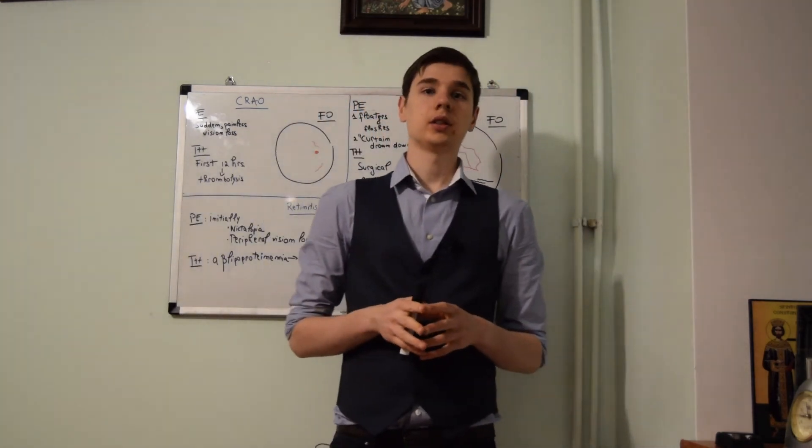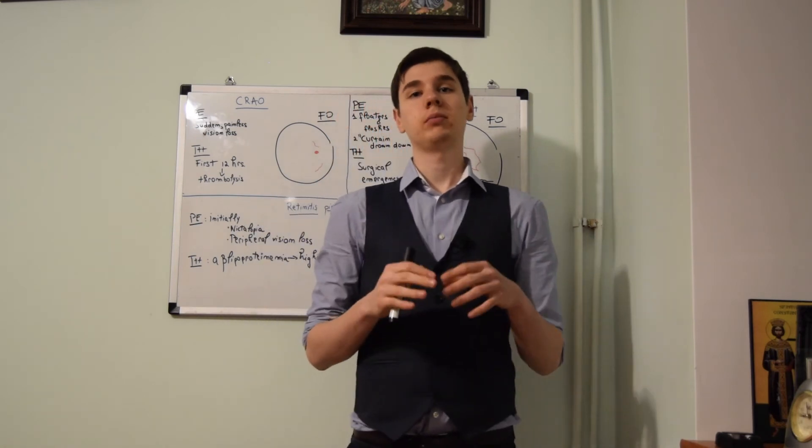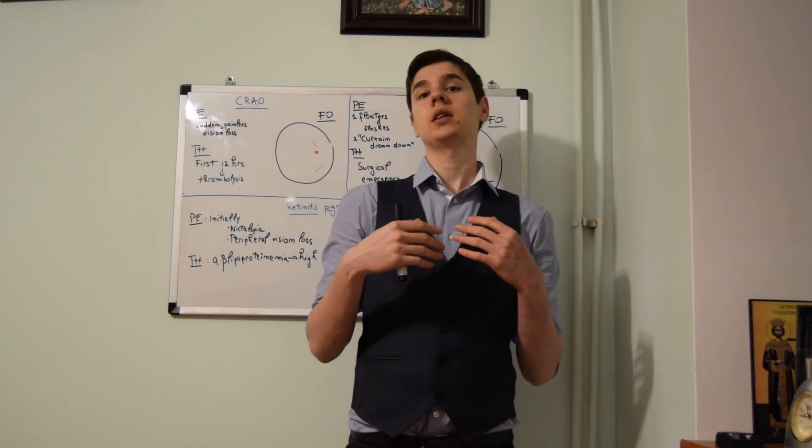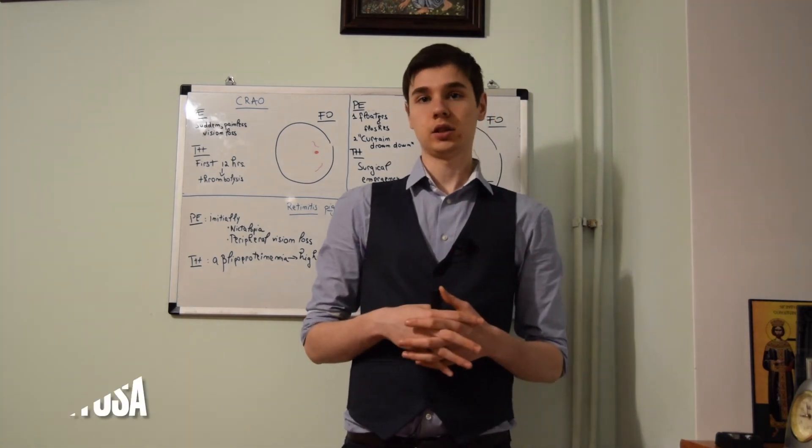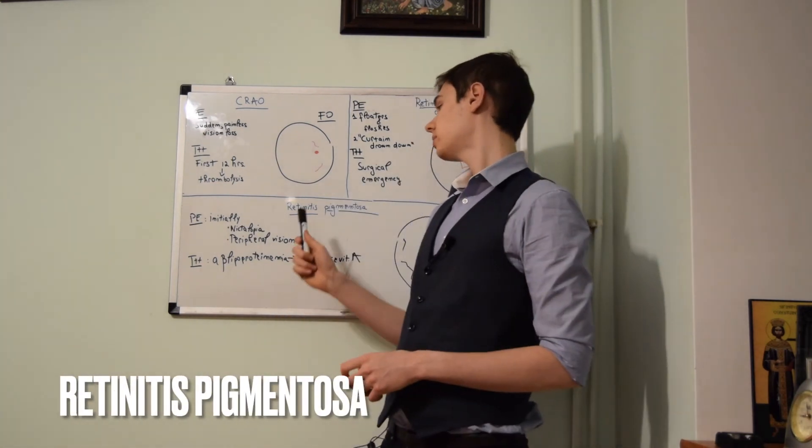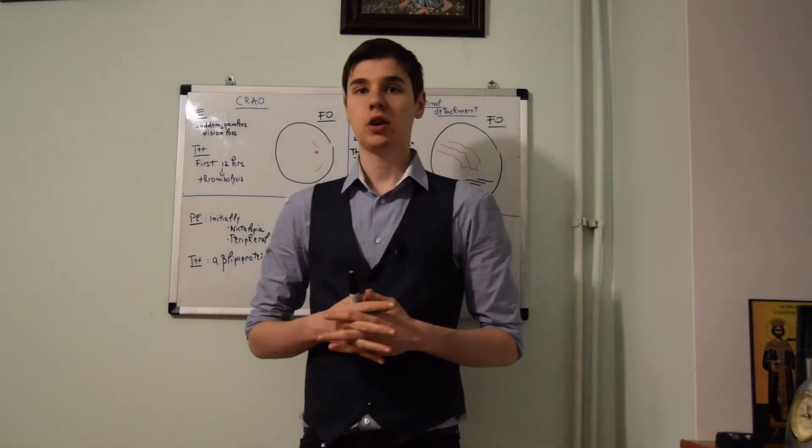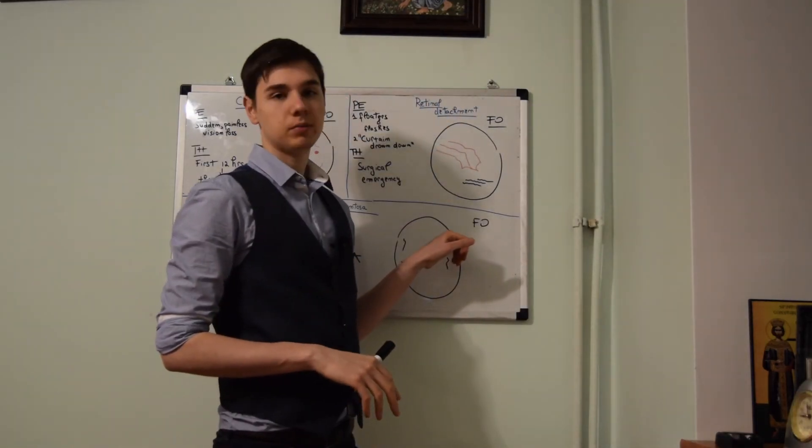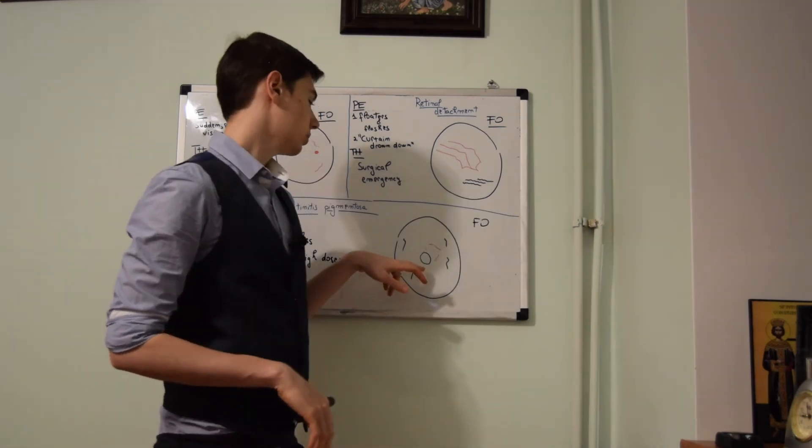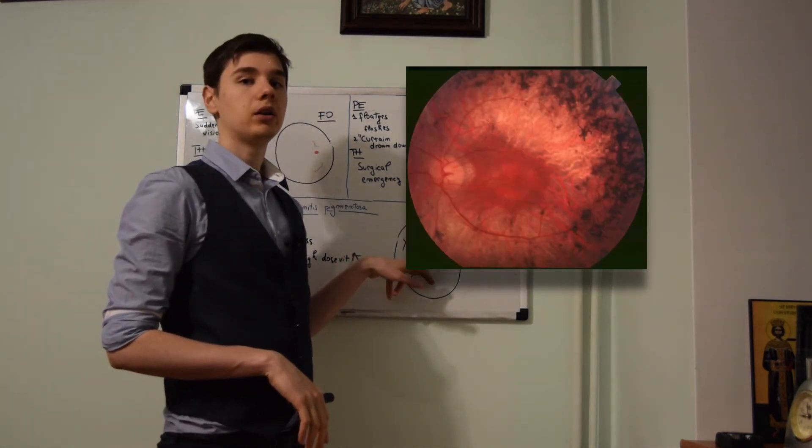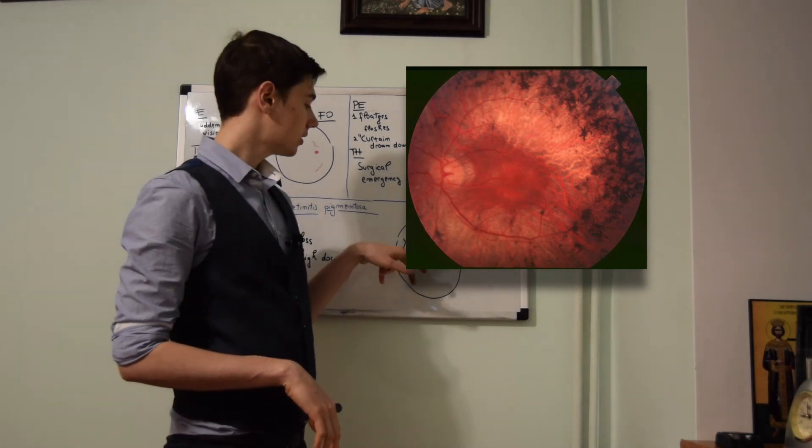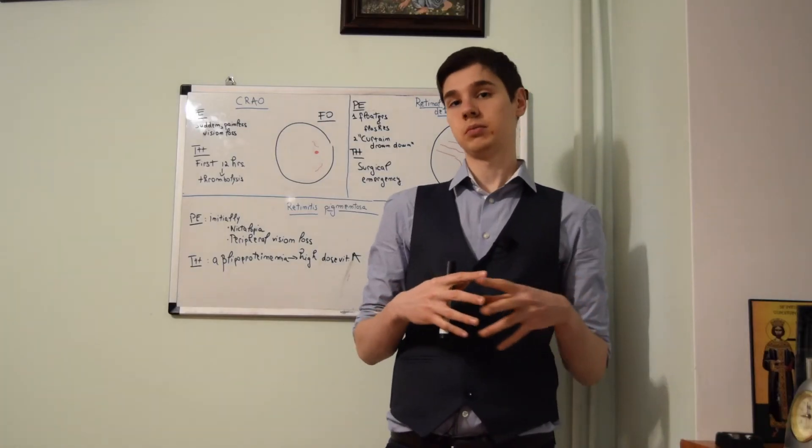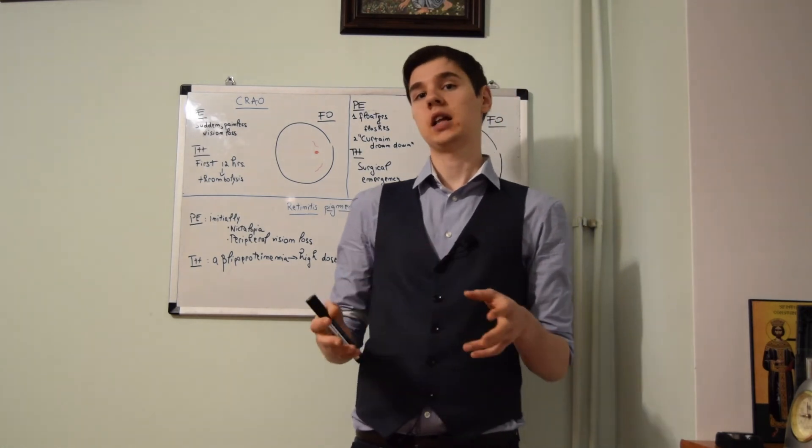The last condition that we can see on NBMEs regarding fundoscopic images is a genetic condition. It is called retinitis pigmentosa. On the fundoscopic image, there will be pigmentations in bony specular pattern. Also, there will be pallor of the optic disc and arterial attenuation. The first symptom the patient has is nyctalopia.